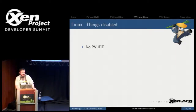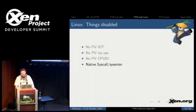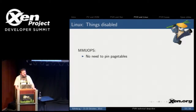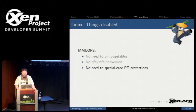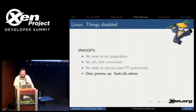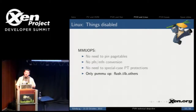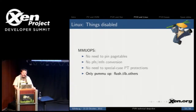Things disabled — this is kind of a nice list to have. There's no PV IDT, no PV IRQ ops (those are special callbacks that happen after the IRQ), no PV CPUID. We have a native syscall/sysenter. No PV VM assists, no event channel callbacks, no need to set the I/O privilege level when doing a certain kind of I/O. And in particular for MMU ops, there's no need to pin the page tables, no need to do a PFN to MFN conversion, no need to special-case the page table protections. There's only one PV MMU op which we need to actually have a special case for Xen: TLB flush others — presumably because it's cheaper and easier to simply ask Xen to flush the other guest's TLB than to send IPIs yourself.